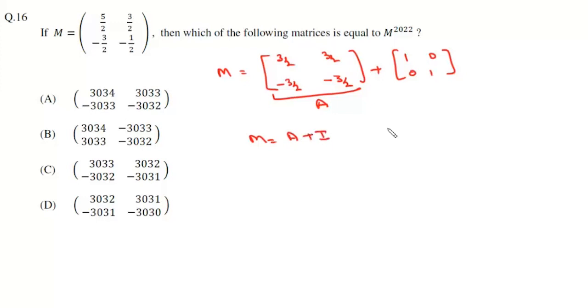Now we have to check if A is nilpotent. We can write this A as 3/2 times the matrix 1 1 minus 1 minus 1. Now if we find A square, it will be 9/4 and then it will be 1 1 minus 1 minus 1 into 1 1 minus 1 minus 1. If we multiply it we'll get this as 0 0 0 0.